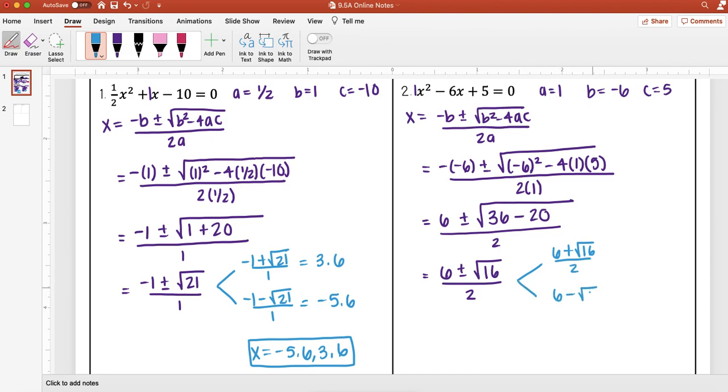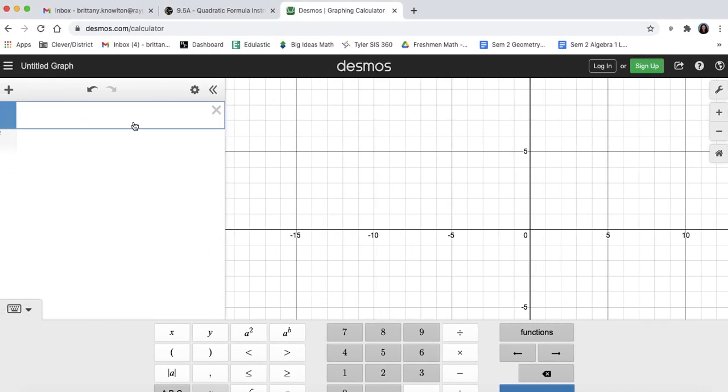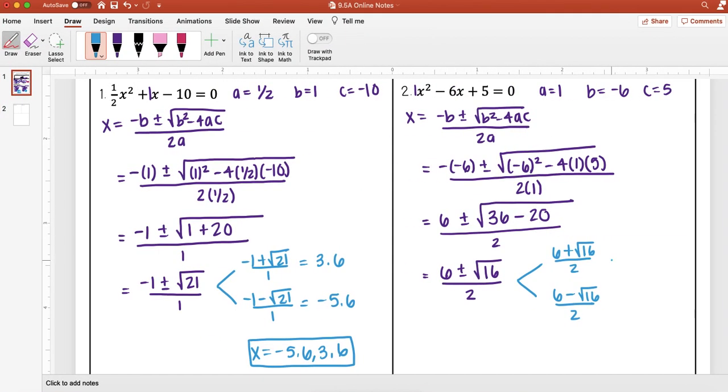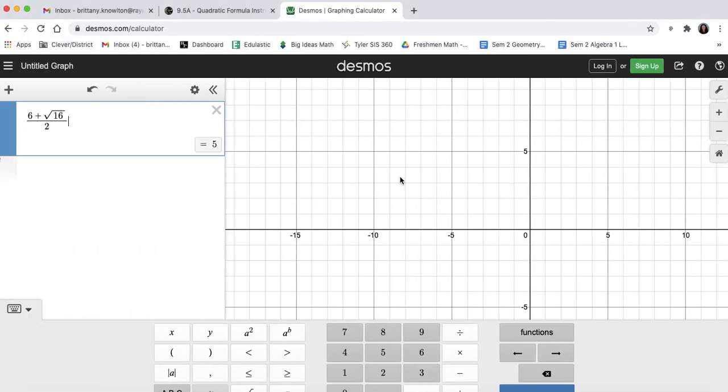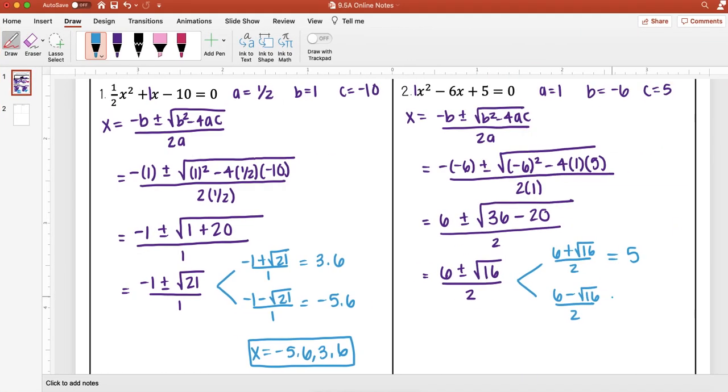So the first one I'm going to have 6 plus the square root of 16 over 2 and then 6 minus the square root of 16 over 2. So I put in the Desmos, if you want that fraction right away you can put that division sign first. So hit the slash button on your keyboard and so I want 6 plus square root of 16 over 2 and I find that's 5. And then for that second answer I'm just going to change that plus to minus and I get 1. So x is going to equal 1 and 5.